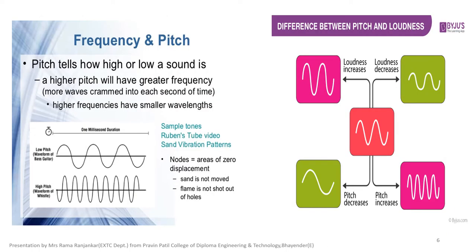The next characteristic is frequency and pitch. Pitch tells how high or low a sound is. The higher the pitch, the greater the frequency, and higher frequency will have a smaller wavelength. Regarding the difference between pitch and loudness: as loudness increases or decreases, pitch decreases or increases accordingly.